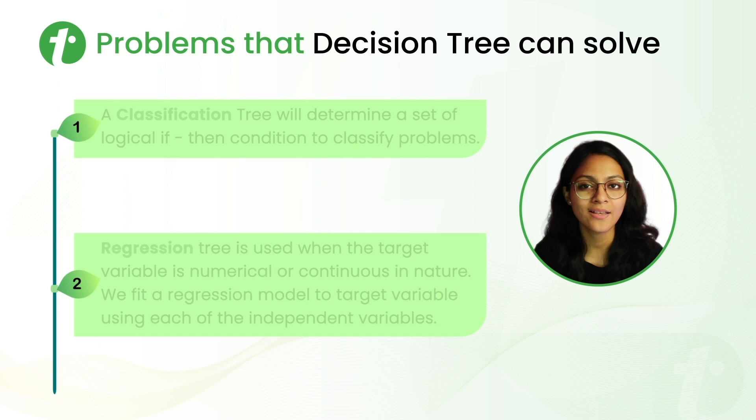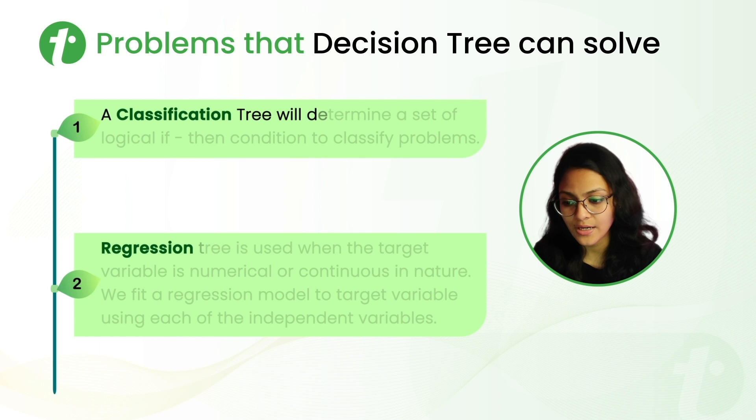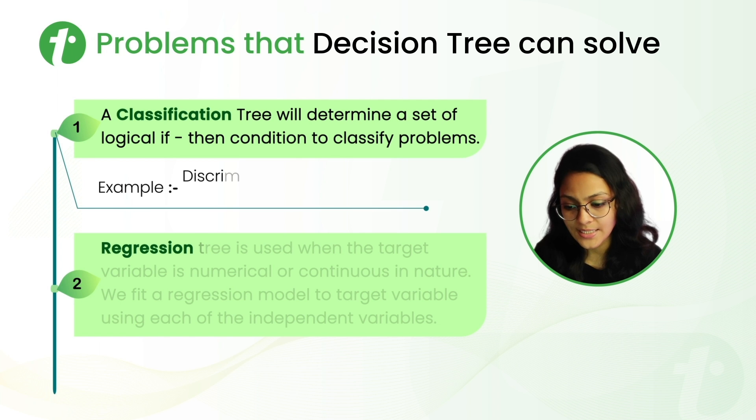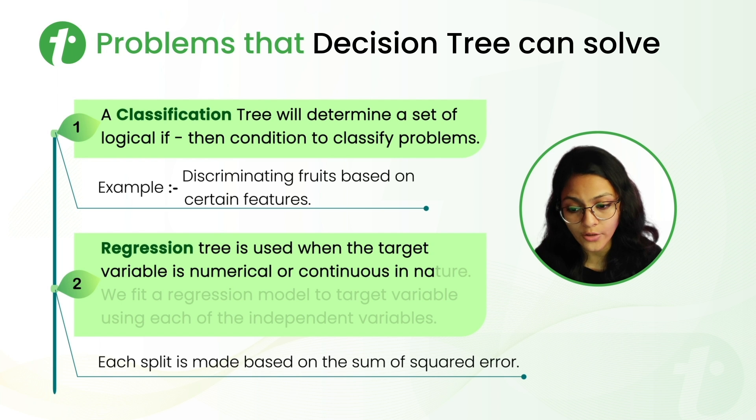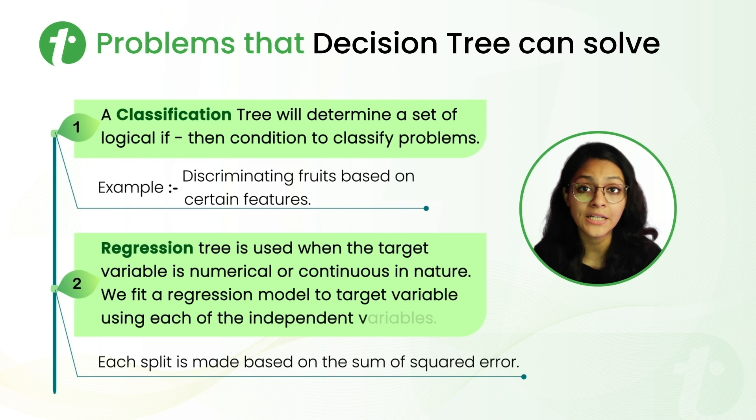Next is, what kind of problems decision tree can solve? So there are two kinds of problems that decision tree can solve. First is classification and second is regression. A classification tree will determine a set of logical if-then conditions to classify the problems. For example, discriminating fruits based on some certain features. While regression tree is used when the target variable is numerical or continuous in nature.